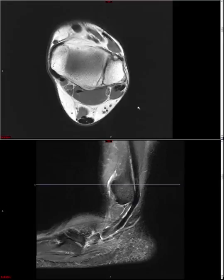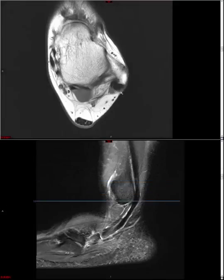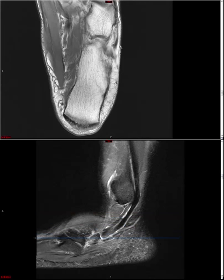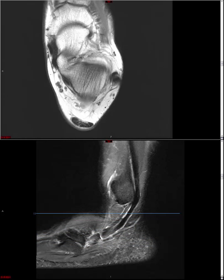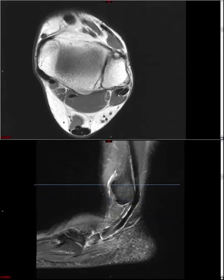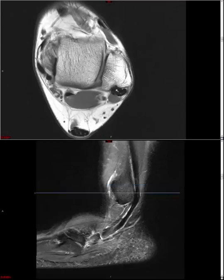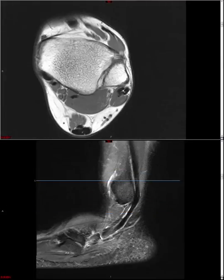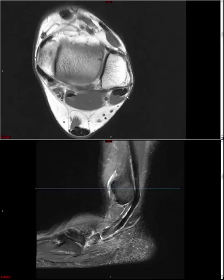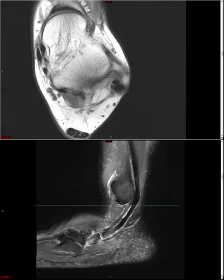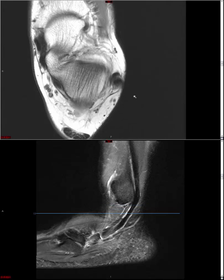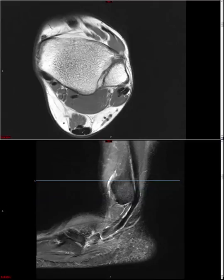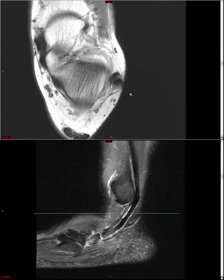Peroneus brevis doesn't travel nearly as far, so most of the time we can get away with looking at it on just the axial. If it's heterogeneous in signal or slightly increased but not fluid signal in character, we would call tendinosis. If we see fluid signal, we call a tear. A commonly encountered tear is a split tear of peroneus brevis — on MRI you would see two sub-tendons, giving a Mickey Mouse or similar appearance.